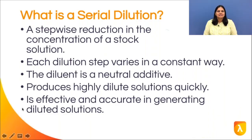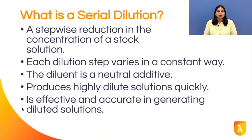Serial dilution is a stepwise reduction in the concentration of a solution. The change in concentration is constant at each dilution step. The diluent used to make the dilutions is a neutral additive that does not change the properties of the sample. Serial dilutions are a fast, efficient, effective, and accurate approach to produce highly diluted solutions.